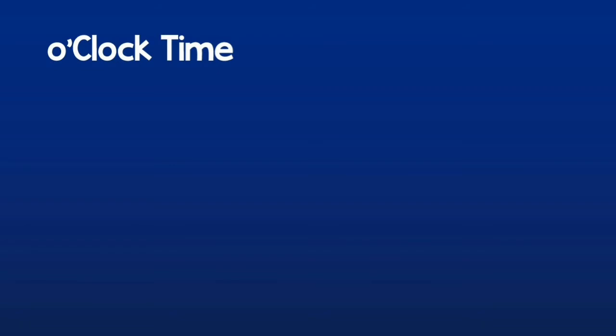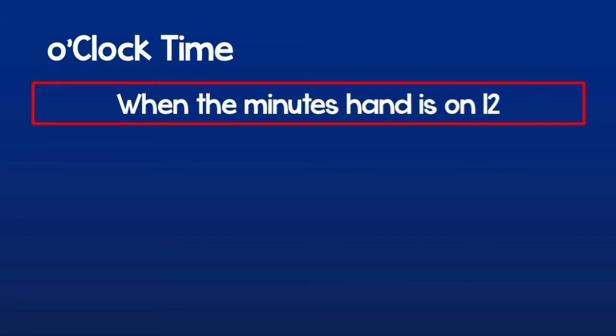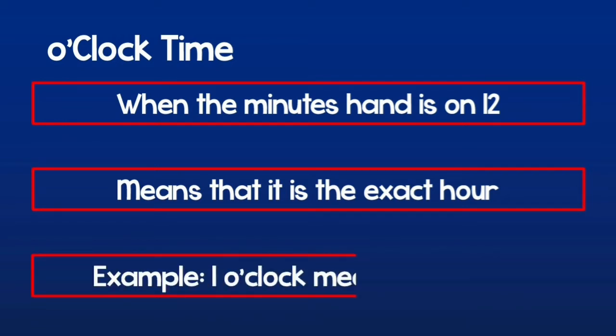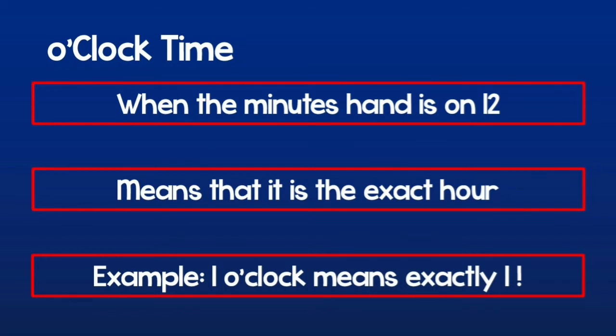Now let's learn how to read the o'clock time. O'clock time happens when the minutes hand, which is the long hand, is on 12. It means that it is exactly the hour that I am looking at, which means that 1 o'clock means exactly 1.